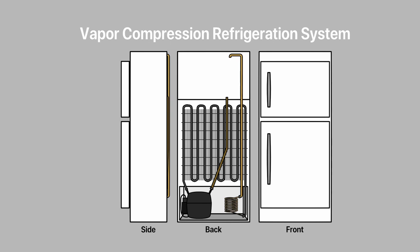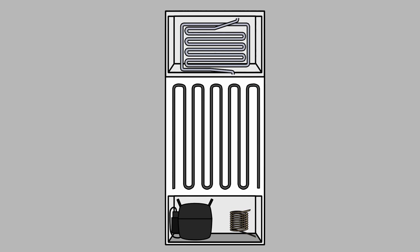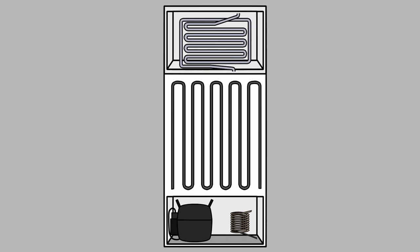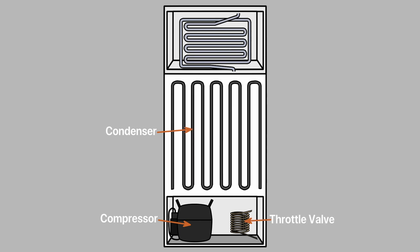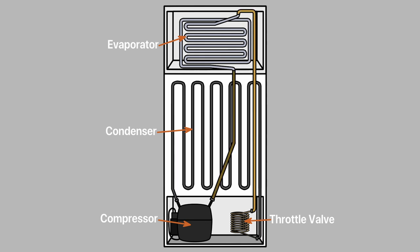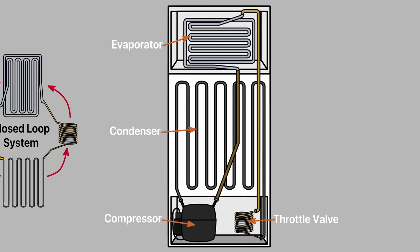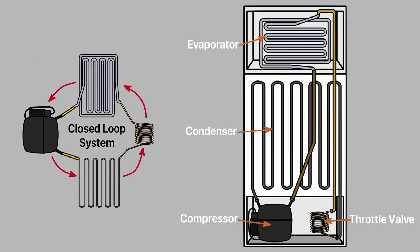How a vapor compression refrigeration system works. The major components are the compressor, the condenser, the throttle valve, and the evaporator. All four of these components are connected by connecting pipes, creating a closed loop system.